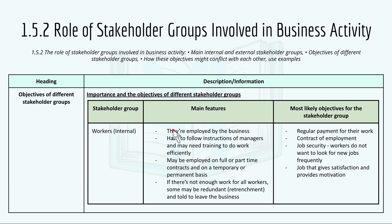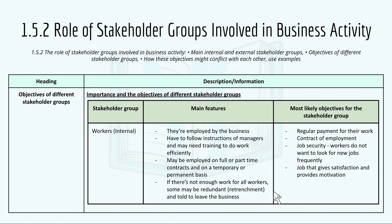Workers are an internal stakeholder group. The main features: they are employed by the business and must follow instructions of managers, they may need training to work efficiently, and may be employed on full or part-time, temporary or permanent contracts. If there's not enough work, some may be made redundant. This has been seen in some companies during the COVID-19 pandemic, where many businesses lost money and some workers had to be made redundant.